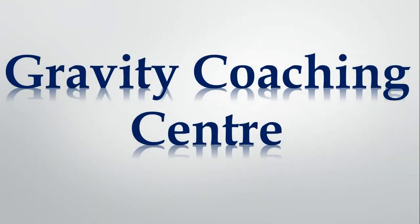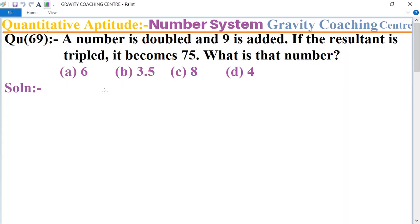Welcome to our channel Gravity Coaching Center, Quantitative Aptitude chapter Number System, question number 69. A number is doubled and 9 is added, and if the resultant is tripled it becomes 75. What is that number?